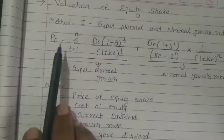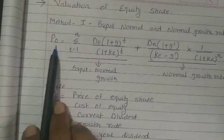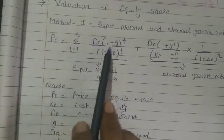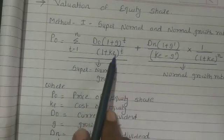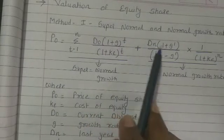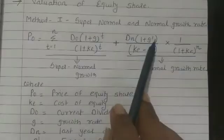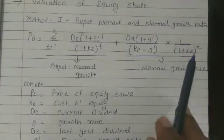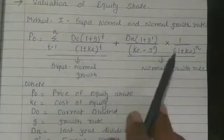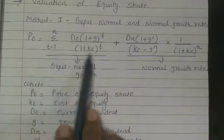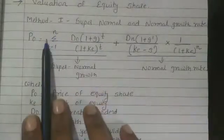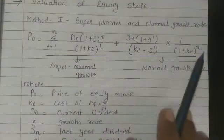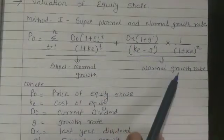What is the formula for present value of the equity share? P0 equals summation T=1 to N of D0 into (1+G)^T upon (1+K)^T, plus Dn(1+G') upon (K minus G'), into 1 upon (1+K)^N. This formula is divided in two parts: the first part is super normal growth, and the last part is the normal growth rate.